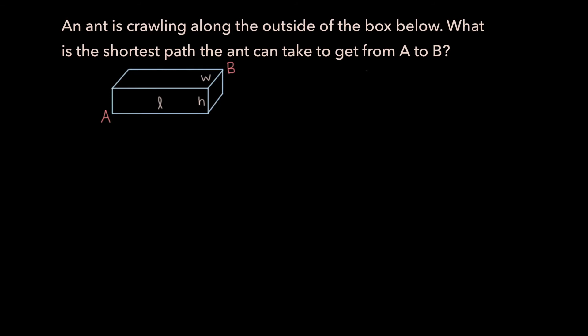Returning to our original problem, it seems like a 3D problem, but in reality it's not. The ant can only travel on the surface of the box, not the inside, so we are actually dealing with a 2D problem here as well. Your first intuition for the shortest path might be: the ant travels along a diagonal to a corner, then along an edge to reach B. This is a reasonable first guess, but there are shorter paths, and it's easiest to visualize them by flattening the box.